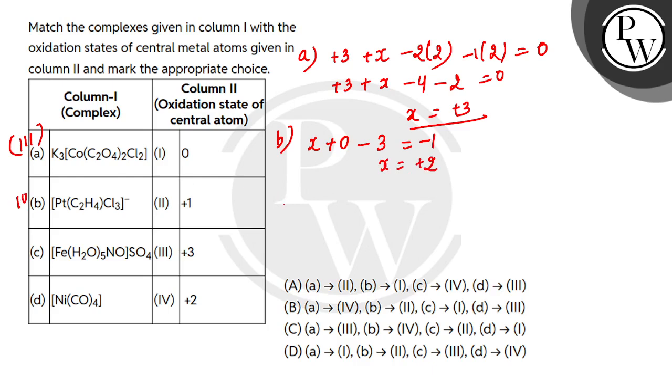C ko dekh liethe hai. Iron ke liyeh x, H2 neutral ligand hai, NO nitro se hoota hai positive one ka charge contribute kareta hai, sulfate minus two ka charge contribute kareega, overall zero. Toh aapka x ki value kia nikal kia jayegi, plus one. Okay, toh c ka match ho jayega humara second ke saath me.